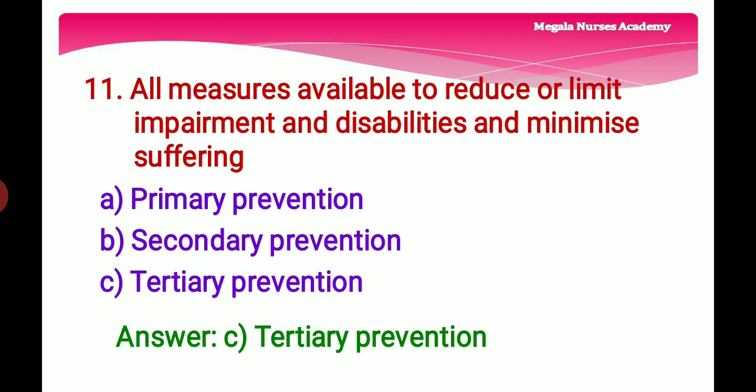Eleventh question: All measures available to reduce or limit impairment and disabilities and minimize suffering — Option A: Primary prevention, which prevents onset of illness. Option B: Secondary prevention, focusing on early diagnosis and appropriate treatment. Option C: Tertiary prevention, focusing on people already affected by disease to improve quality of life, reduce disability, and limit complications. The right answer is Option C, tertiary prevention.